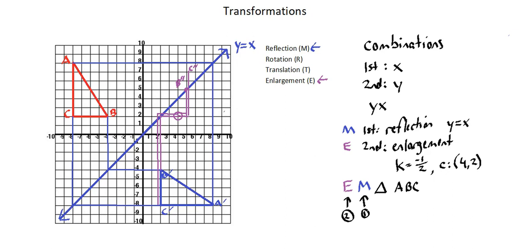Now we evaluate A prime. A prime to the center is a move up from negative 8 on the y-axis to positive 2 — a move up of 10 — and from x equals 8 to x equals 4, a move left of 4. We want half of each: a move left of 2, and an upward move of 5, from y equals 2 to y equals 7. So A double prime is (2, 7). With the image points identified, we can complete the enlargement triangle.